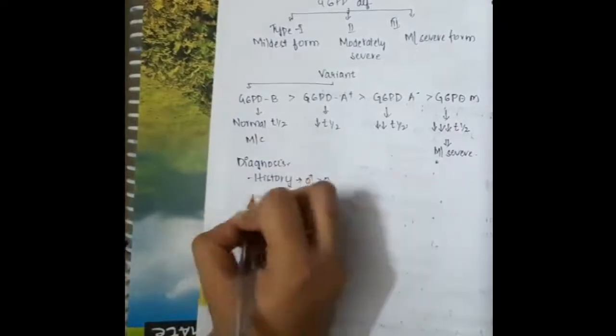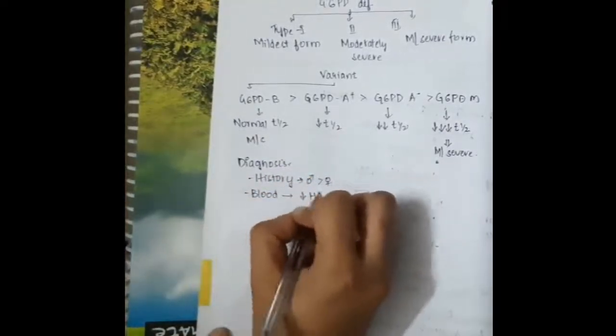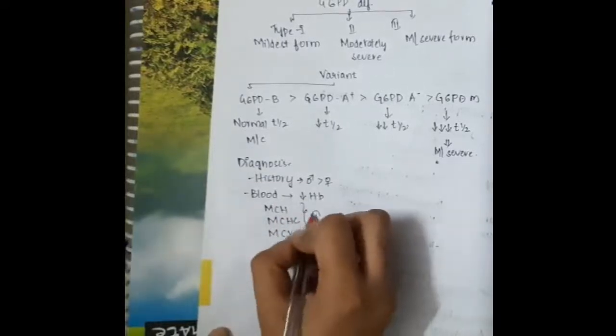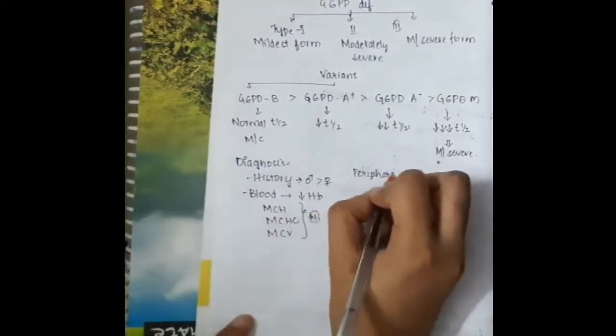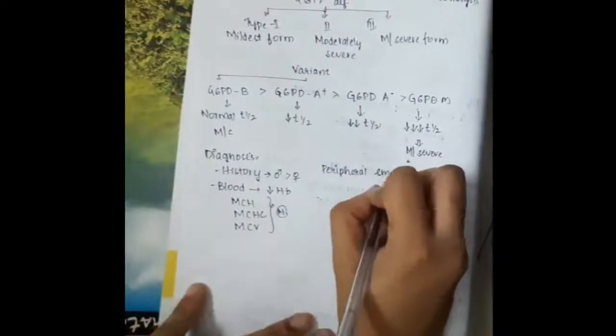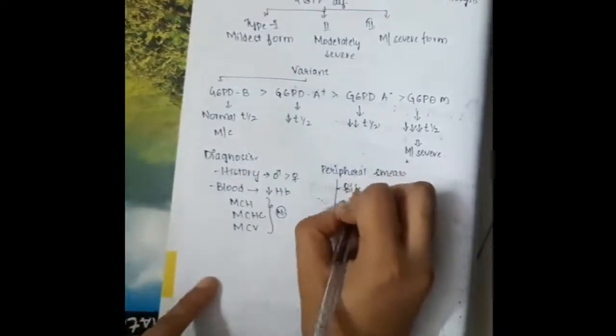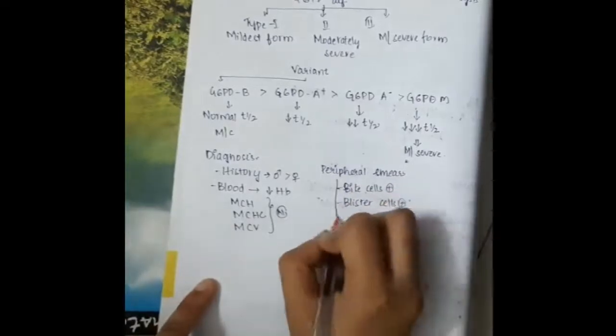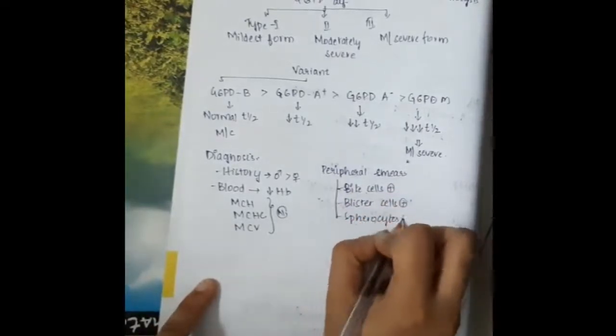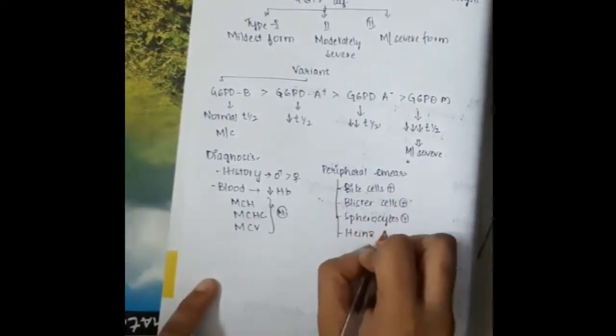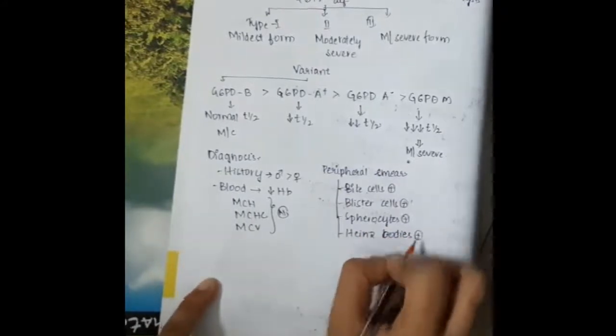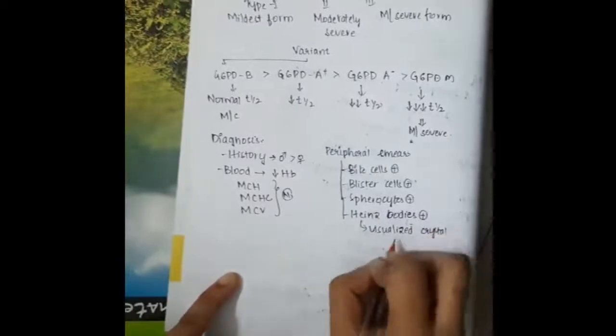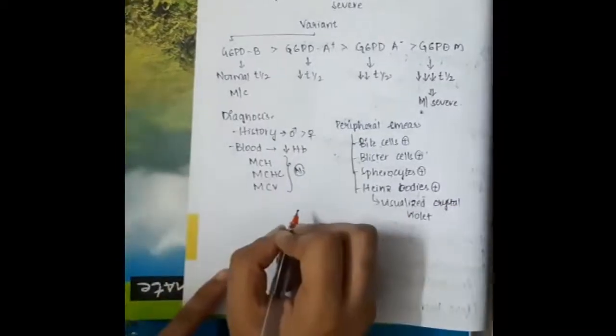Diagnosis is done by history. If we do blood examination, we normally see decreased hemoglobin; other parameters will be normal. If we do peripheral blood smear examination, bite cells are present, blister cells and spherocytes are seen with HND stain. But Heinz bodies are seen with crystal violet stain. With the help of crystal violet stain, Heinz bodies are visualized.